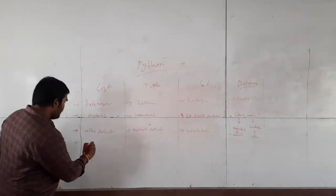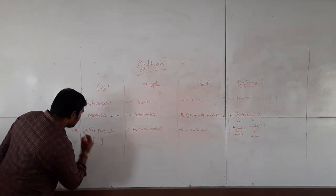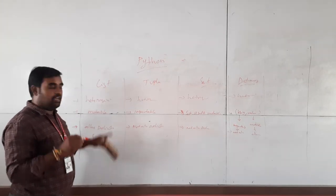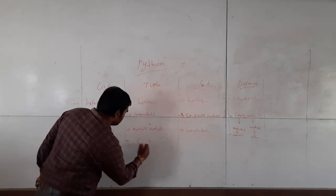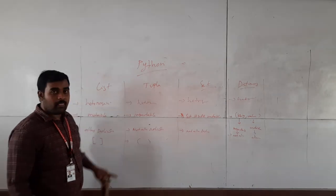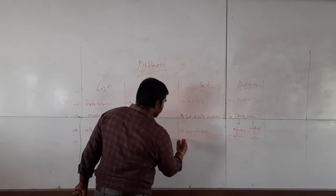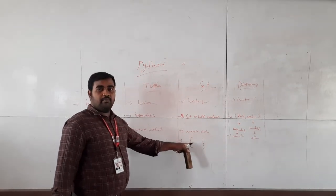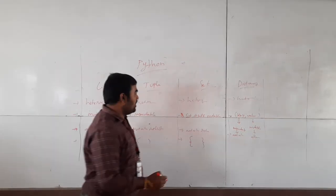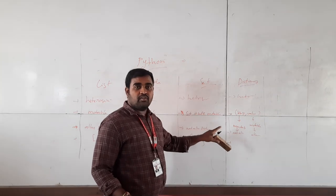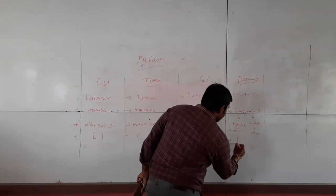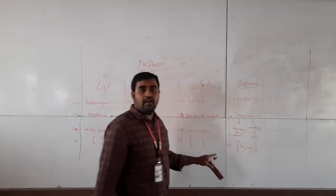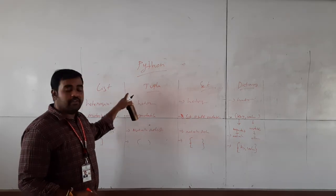And then how to represent each data type? By using square brackets, it is the list representation — you can assign values to the list using square brackets. By using parentheses, you can represent a tuple. By using curly braces, you can represent a set. Dictionary also uses curly braces, but it is the combination of key and value pairs. These are the main differences between the four data types.